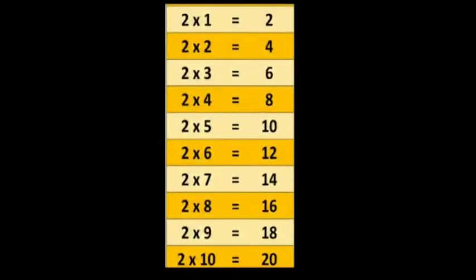Table of 2: 2×1 is 2, 2×2 is 4, 2×3 is 6, 2×4 is 8, 2×5 is 10, 2×6 is 12, 2×7 is 14, 2×8 is 16, 2×9 is 18, 2×10 is 20.